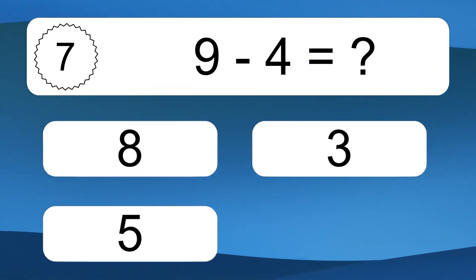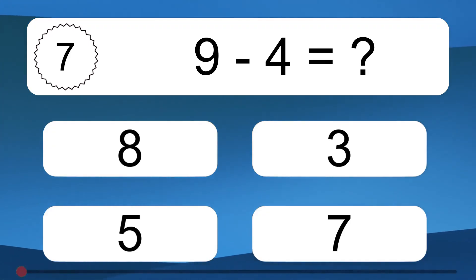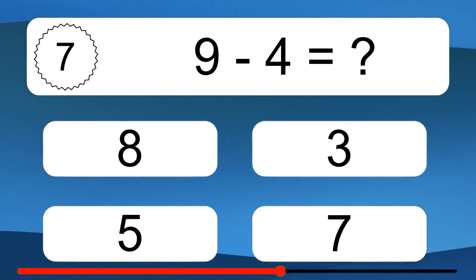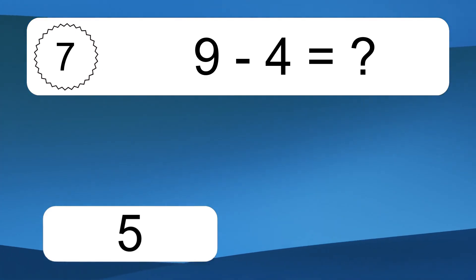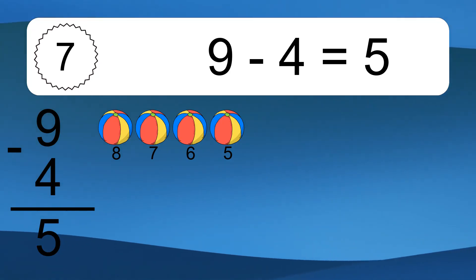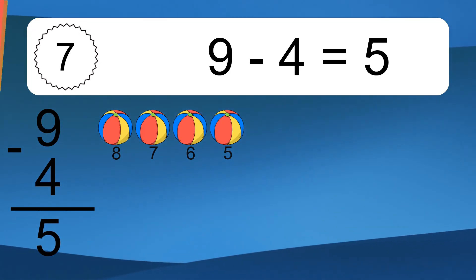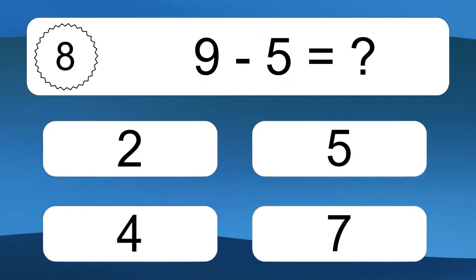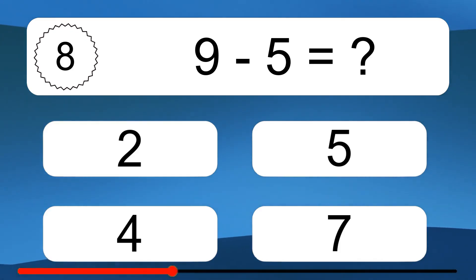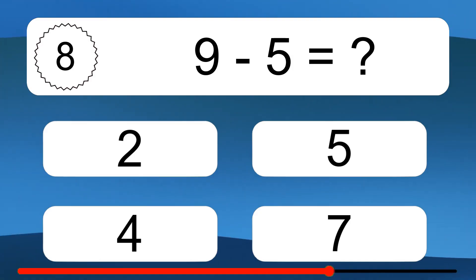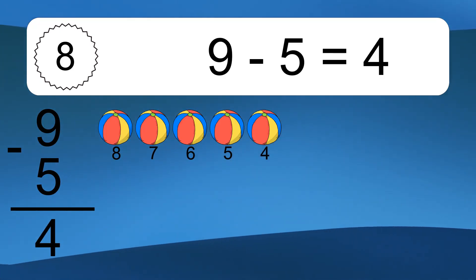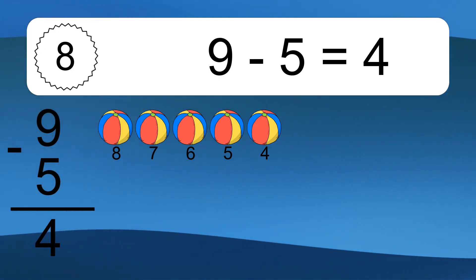9 minus 5 equals what? 9 minus 5 equals 4. Let's count it: 8, 7, 6, 5.